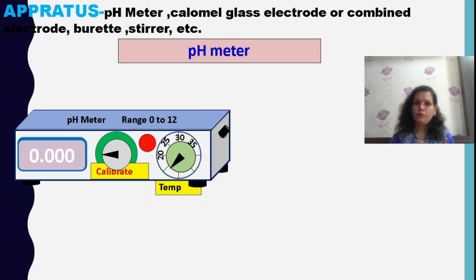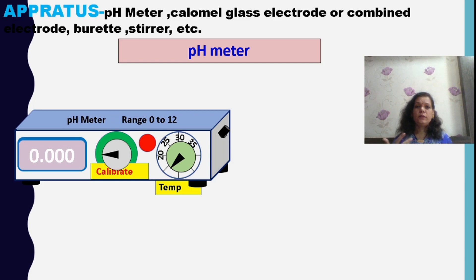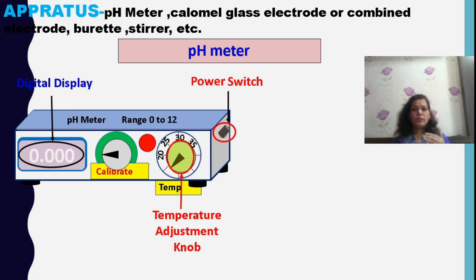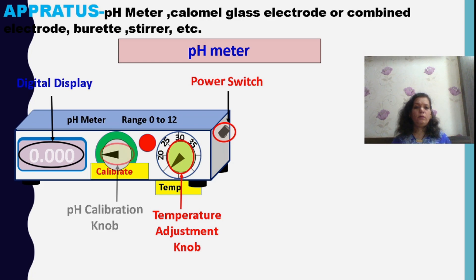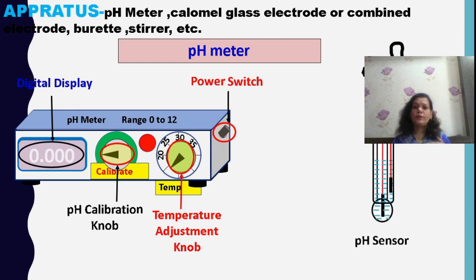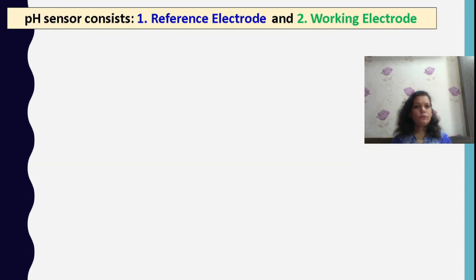In this experiment, we are going to utilize a pH meter with a glass electrode, which may be combined with a calomel electrode or used as a combined electrode. I need a burette, stirrer, and this digital pH meter. Here is the power switch, and this is the temperature adjustment knob — since pH is dependent upon temperature, I have to adjust to room temperature using this knob. The calibration knob is used to calibrate or standardize the pH meter. This is the pH sensor, termed the glass electrode, utilized to measure the pH of a solution.